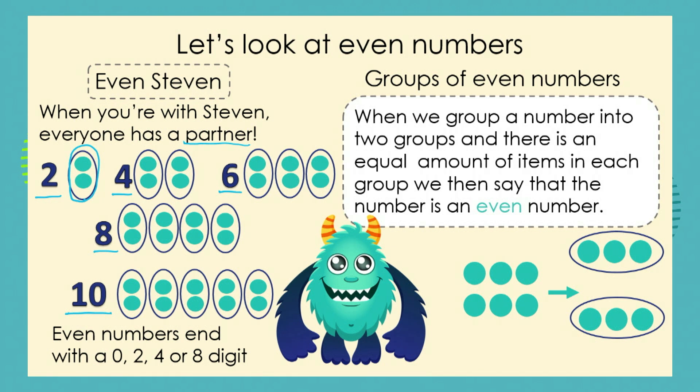Even Stephen wants us to remember that even numbers always end with a zero, a two, a four, a six, or an eight digit. So this means, for example, if we have the number 10, the number 10 ends in the digit zero. So this tells us that it is an even number.